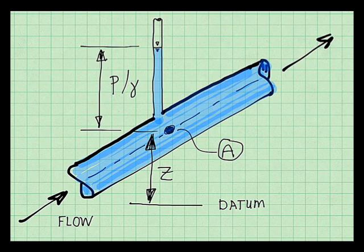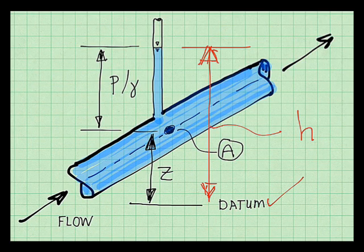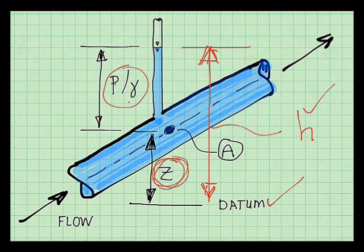Engineers are also interested in a height measured with respect to an elevation datum. So I'll sketch that here. This particular height is given the symbol h and is called the piezometric head. And it's simply the sum of P over gamma plus the z, so the sum of this term plus this term.